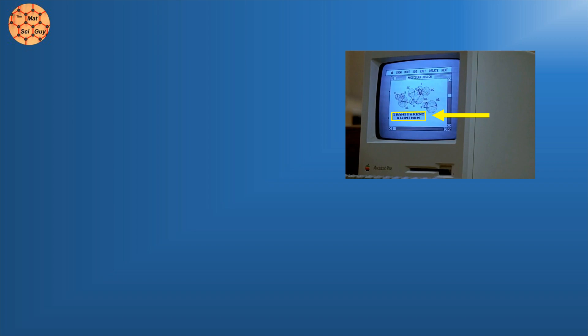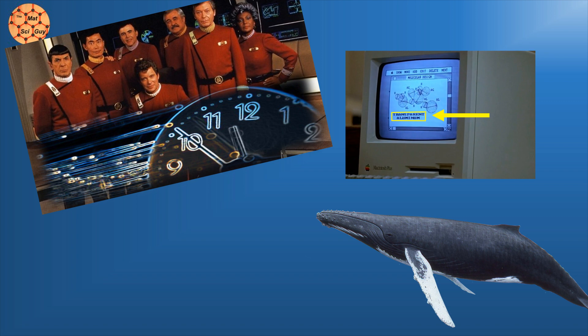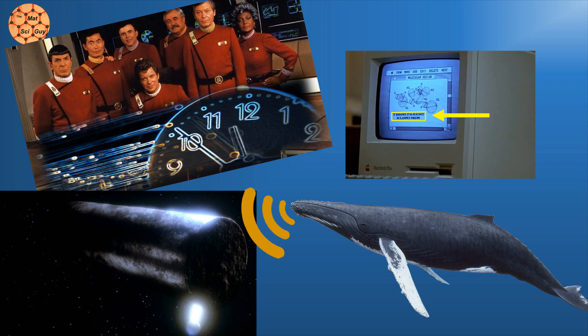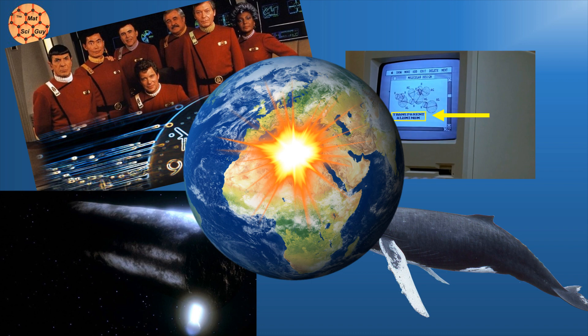Transparent Aluminum is a fictional material introduced to Star Trek canon in the fourth major film, when a time-traveling Enterprise crew needs to capture humpback whales in 1986 so that the whales can communicate with an ultra-powerful alien probe that's threatening to destroy the world.